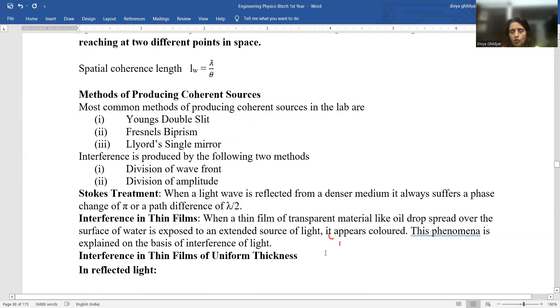What are the most common methods of producing coherent sources in the lab? You must have heard your famous Young's double slit experiment, Fresnel's biprism, Lloyd's single mirror, all these give rise to coherent sources. But I will explain you right now that even a thin film will also give rise to coherent sources. And interference is produced by two methods: division of wave front and division of amplitude.